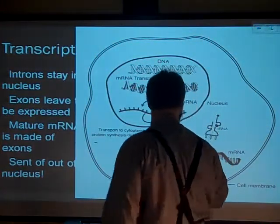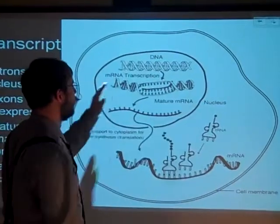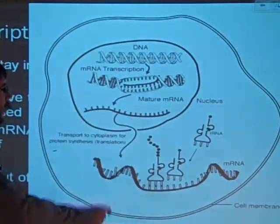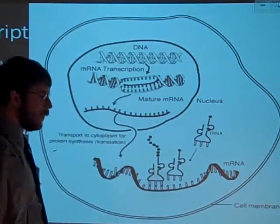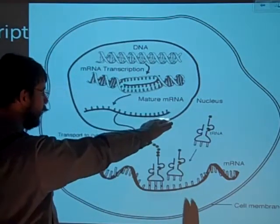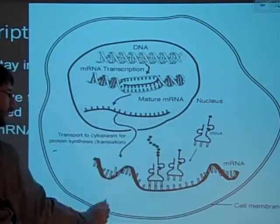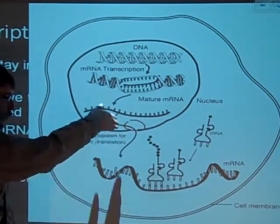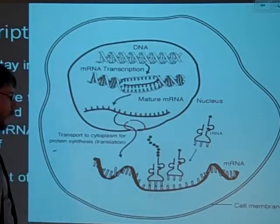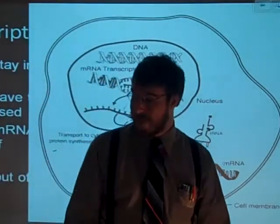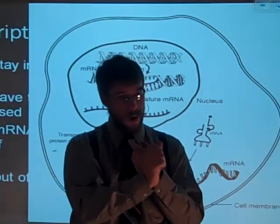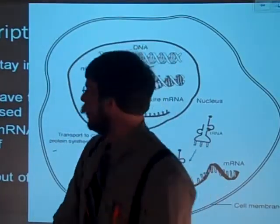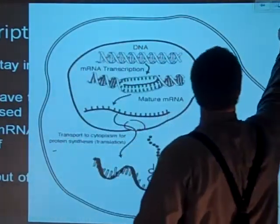That chain of exons gets sent out of the nucleus. You can see here: DNA goes through transcription, it's got introns and exons in there. The introns are excised and spliced together, leaving you with just the exons. The exons then leave the nucleus right through one of those nuclear pores, and come out for translation and protein making. You should know RNA polymerase, introns, exons, and 3 prime and 5 prime are still in effect.